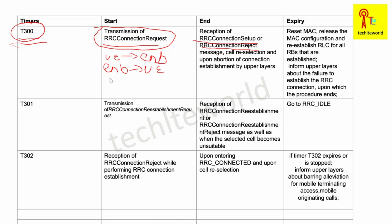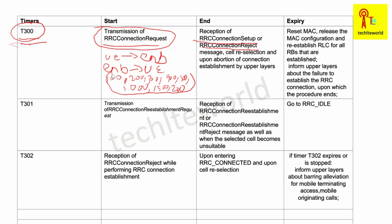Upon T300 expiry, the UE also informs the upper layer about the failure to establish the RRC connection. To summarize: T300 starts upon transmission of RRC Connection Request, and stops when the UE receives RRC Connection Setup or RRC Connection Reject. The range of T300 can be 100ms, 200ms, 300ms, 400ms, 500ms, 1000ms, or 1500ms.